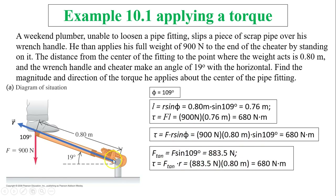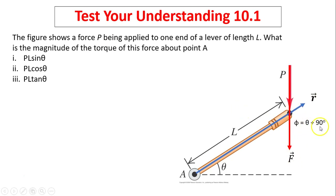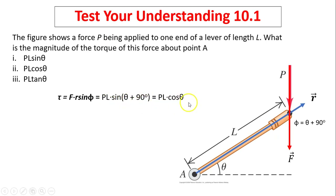It doesn't matter which method you use — you get the same answer, 680 newton meters, and the direction is out of the screen. In another example: a force P is applied to one end of a lever of length L. The angle phi is theta plus 90 degrees. Torque equals P times L times sine of (theta plus 90), and since sine(theta + 90) equals cosine theta, the torque equals P times L times cosine theta. That's it for today — thanks for watching, see you next time.